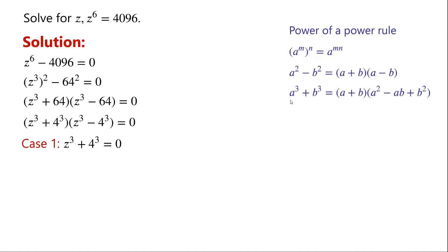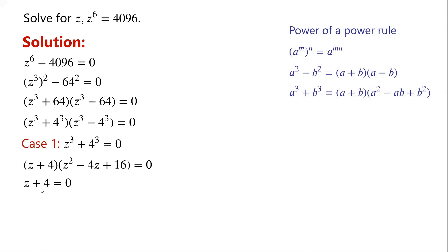We know that a cubed plus b cubed can be written as (a plus b) times (a squared minus ab plus b squared). By applying this, we can now write (z plus 4) times (z squared minus 4z plus 16) equals 0. So either z equals minus 4, or z squared minus 4z plus 16 equals 0.